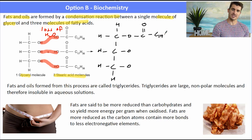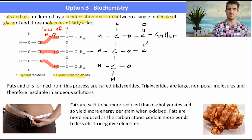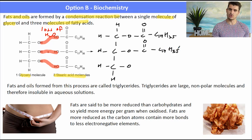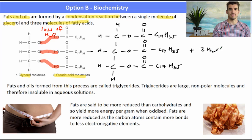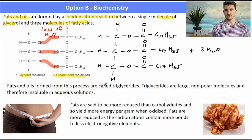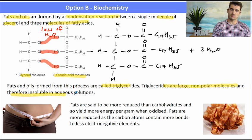There's an ester link between the glycerol and the fatty acid, and then we can just represent the rest of the fatty acid in that simple notation — we don't need to draw it out. It's a good idea to draw the ester link, the O–C double bond O link, as that shows you understand the structure. Don't forget to balance with three water molecules because three water molecules have been formed. In this process, we form a molecule called a triglyceride.